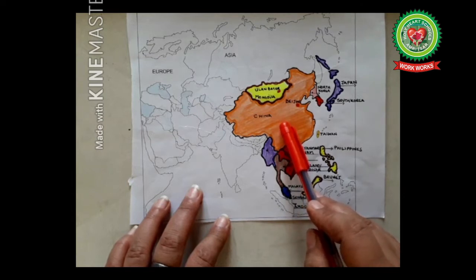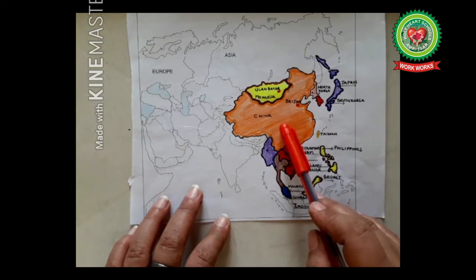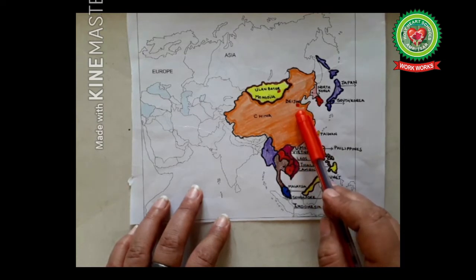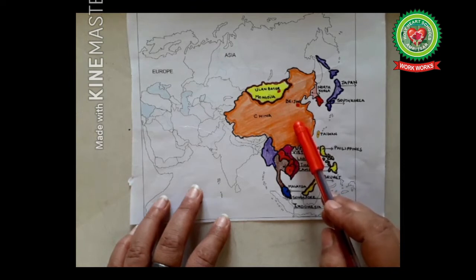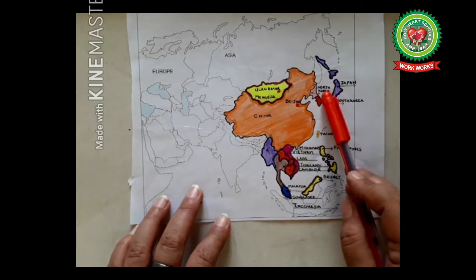Next is China. China's capital is Beijing. China is the third largest country by area and the world's most populous country. China is the mother of inventions — it is famous for the world's longest wall, the Great Wall of China, and the Terracotta Army. The highest functioning railway line in the world, which links Beijing and Lhasa in Tibet, was also established by China.